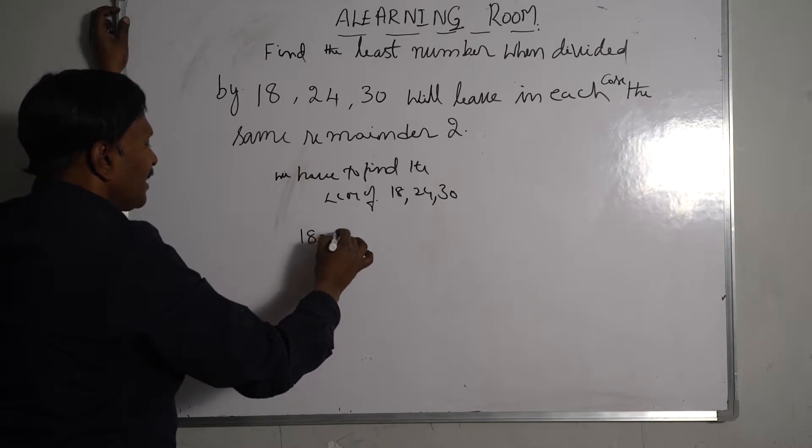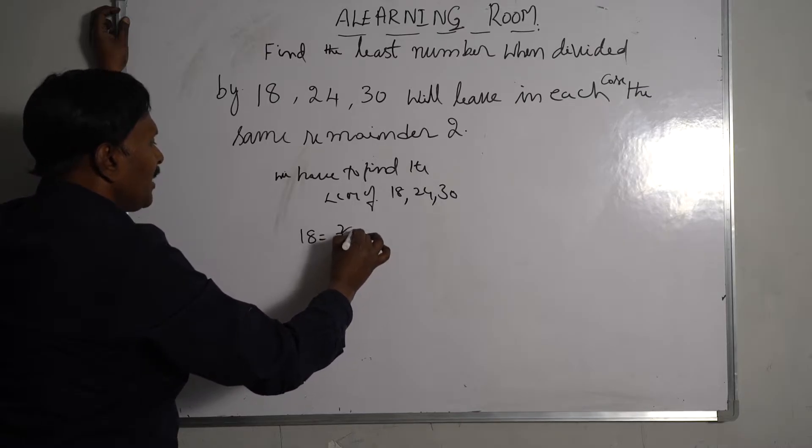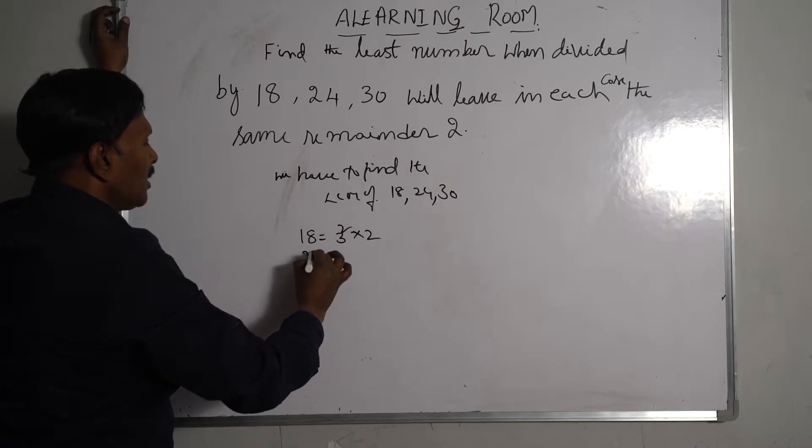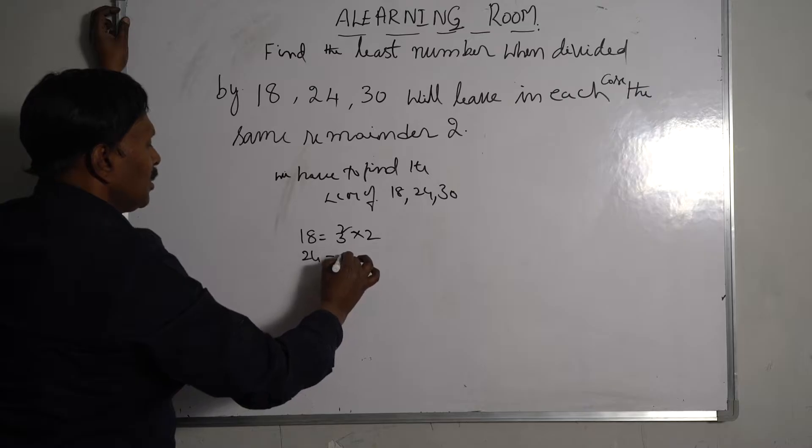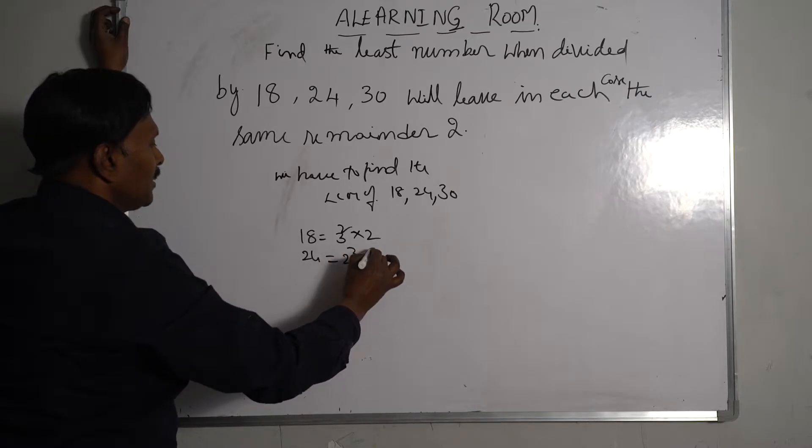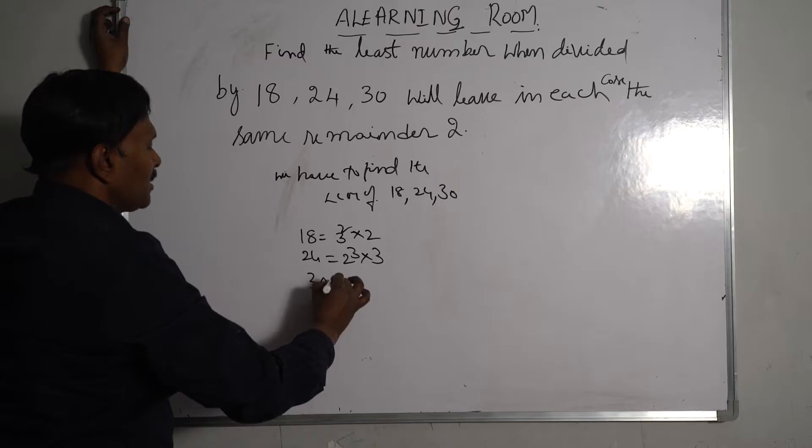18 can be written as 3 squared into 2. 24 can be written as 2 cubed into 3. 30 can be written as 3 into 5 into 2.